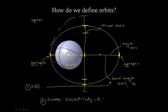Eccentricity is directly related to the radius of the periapsis — the distance from the center of the Earth to the periapsis — and the radius of the apoapsis — the distance from the center to the apoapsis. Because the radius of the periapsis plus the radius of the apoapsis equals the total length of the major axis, eccentricity also depends on the length of the major axis, A.